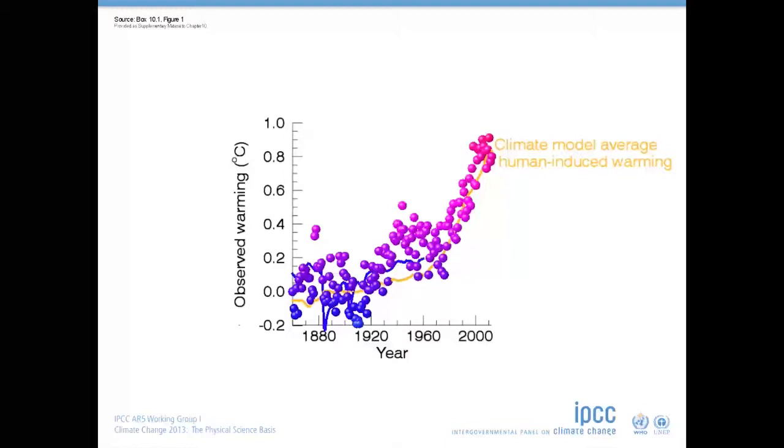The most important of these are volcanic eruptions, which temporarily cool the climate system. Variations in the power output of the sun also play a role. The blue line shows the average of the model's estimates of the response to these natural climate drivers.